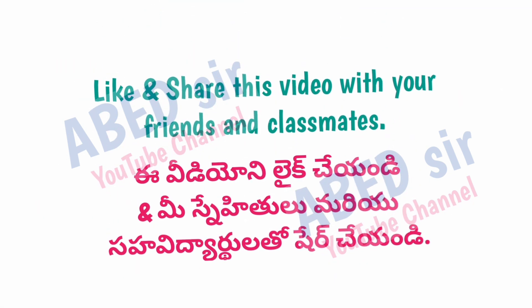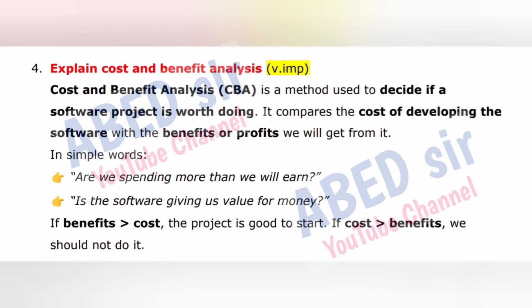The next important long question is: Explain cost and benefit analysis. Cost and Benefit Analysis, or CBA, is a method used to decide if a software project is worth doing. It compares the cost of developing the software with the benefits or profits we will get from it. In simple words: are we spending more than we will earn? Is the software giving us value for money? If benefits exceed cost, the project is good to start. If cost exceeds benefits, we should not do it.